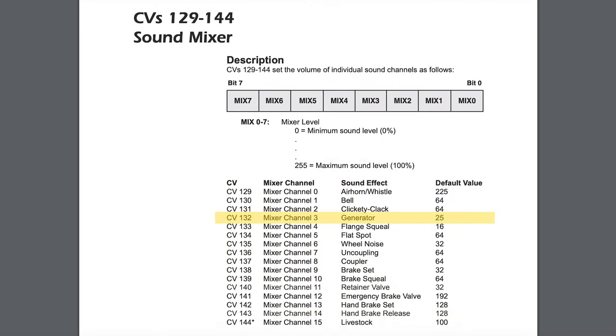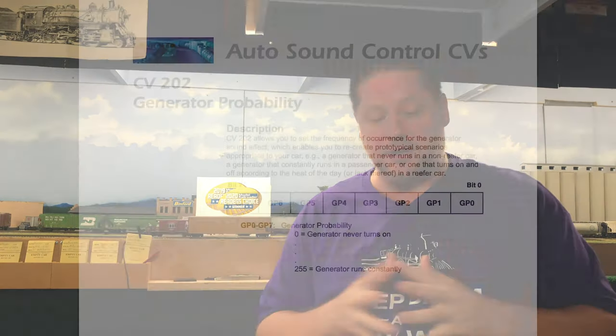Next is volume control. You can adjust the volume of that diesel engine sound up or down depending on your preference. We've defaulted it to a relatively low value — CV132 is set to 25 by default. Volume control ranges from 0 to 255, so 25 is fairly low. Part of the reason we did this is that with all these sound cars playing on a layout, you can imagine the noise generated, so we wanted to subdue it so you can hear it local to the refrigerator car but not halfway across the room.